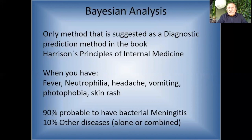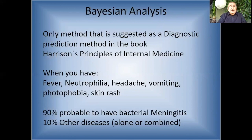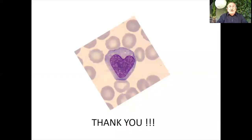In a Bayesian analysis, when you have fever, neutrophilia, headache, vomiting, photophobia, and skin rash, you have 90% probability of bacterial meningitis and 10% of other disorders alone or combined. It calculates probability based on the facts you have - the more facts you have, cell population data, morphology, flow, the better. It will always give you a probability of the different possible disorders. I hope this presentation was useful for you. Thank you very much.